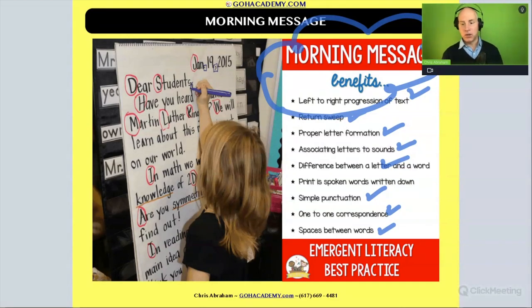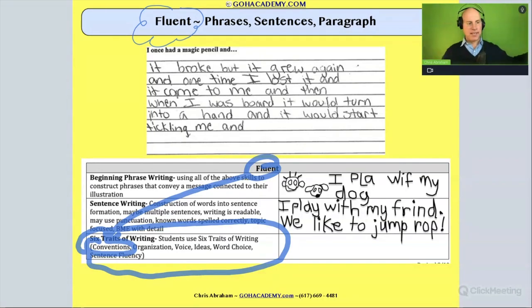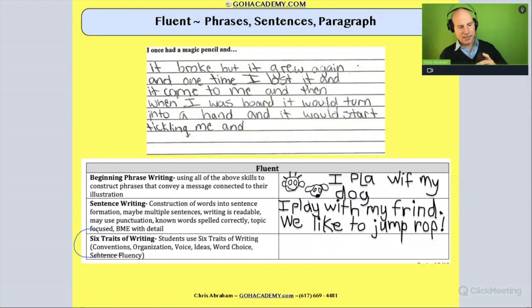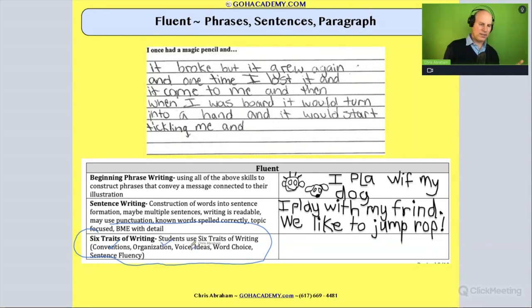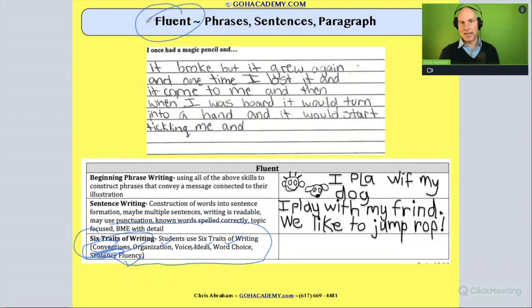Let's go back to this idea: as you become more fluent as a writer and your phrases become sentences and your sentences get expanded, we start to attend to conventions. As our writing gets better, we look at things like conventions, organization, voice, idea, word choice, and sentence fluency. I'll circle 'conventions' — that's capitalization, punctuation, and spelling. Yes, developmentally, second graders would definitely be working on that to build up their writing fluency.